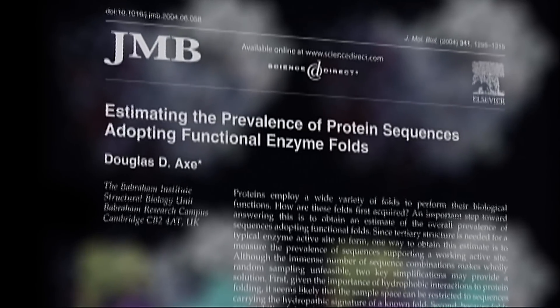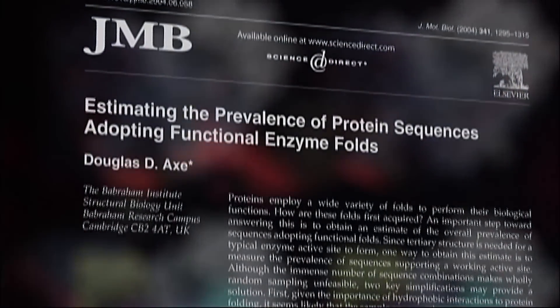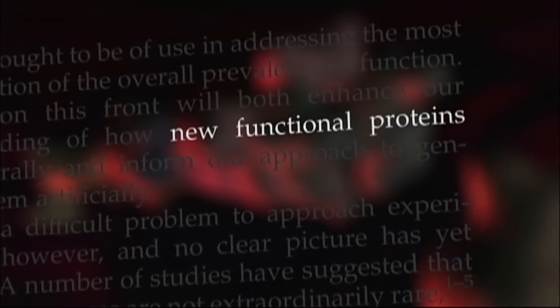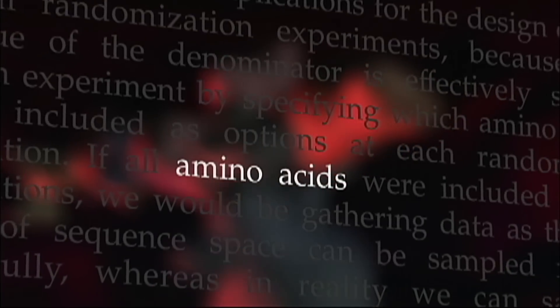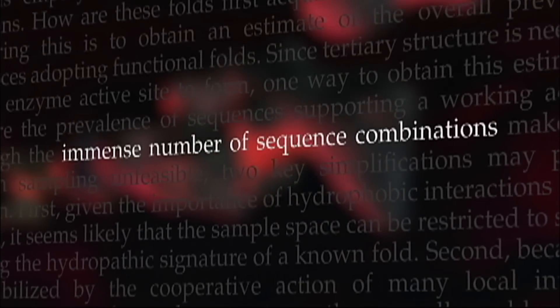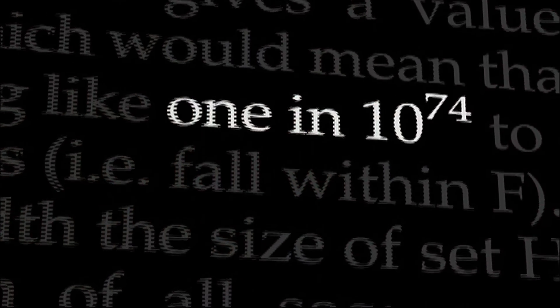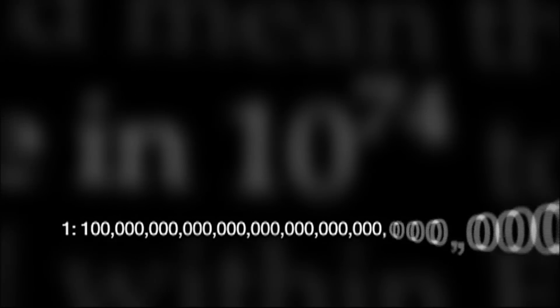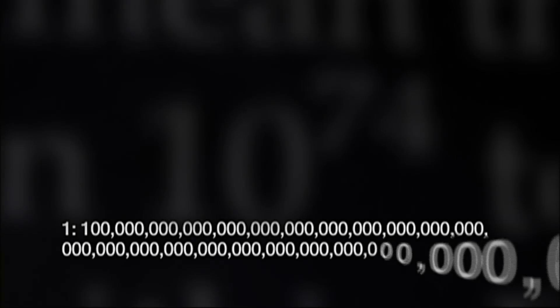How far beyond? Axe published his findings in the Journal of Molecular Biology. He determined that among all the possible amino acid combinations, the probability of generating just one short protein by mutation is roughly 1 in 10 to the 74th power. Or one chance in 100 trillion, trillion, trillion, trillion, trillion, trillion, trillion.